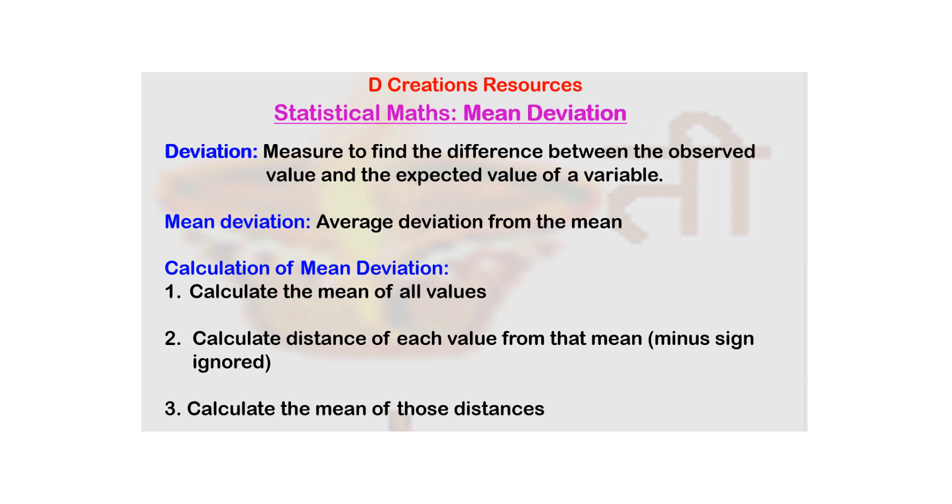Now what is mean deviation? If there are a set of values, you will find deviation of each value, and then find the average of these deviations. That is the mean deviation. The steps are straightforward. First, find the mean or average. That is your reference point. Then calculate distance of each value from that mean.